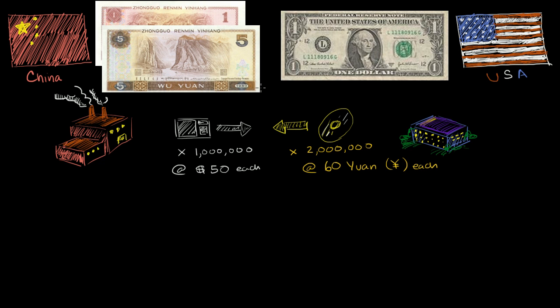And for this simplified example, we're going to assume that the exchange rate between the Chinese yuan and the US dollar is 6 yuan per 1 US dollar.